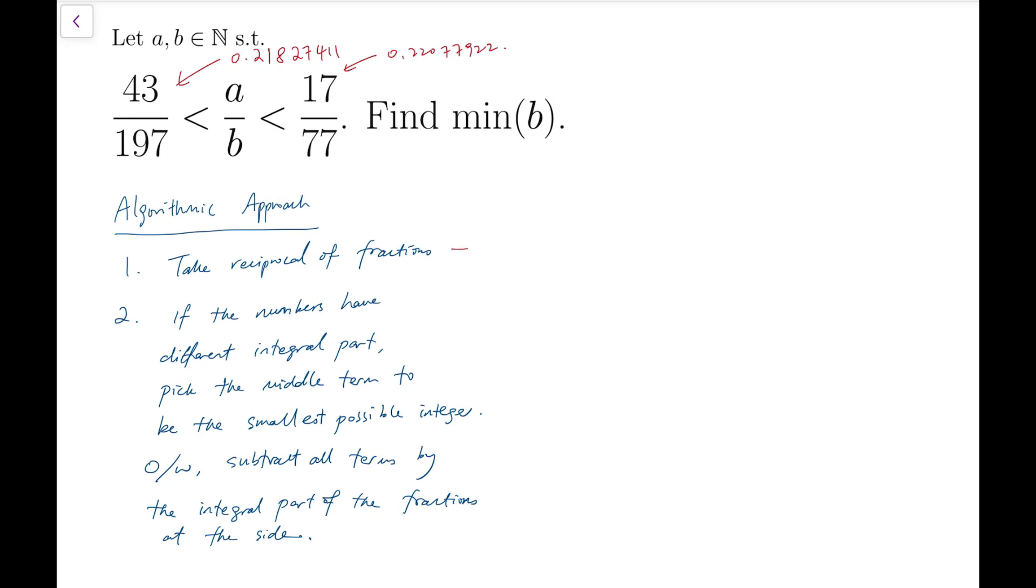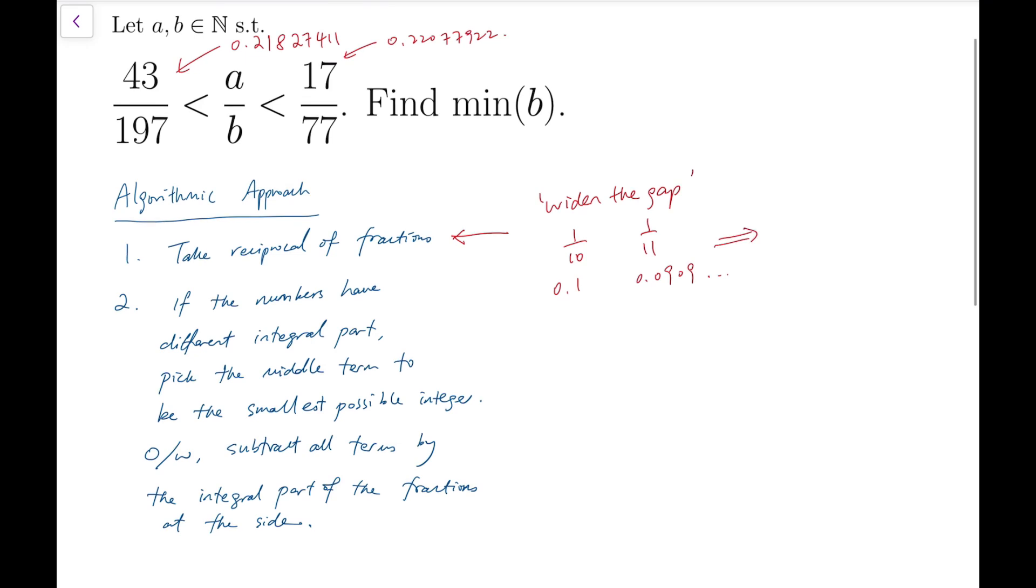First one is to take reciprocal fractions. This helps because it allows us to widen the gap between the two numbers. Let's say the gap between 1 over 10 and 1 over 11 is very small because it's just 0.1 and 0.0909, etc. But when we take reciprocal of the two fractions, then it becomes 10 versus 11. The gap is much wider. So a wider gap allows us to pick the number we want more easily.